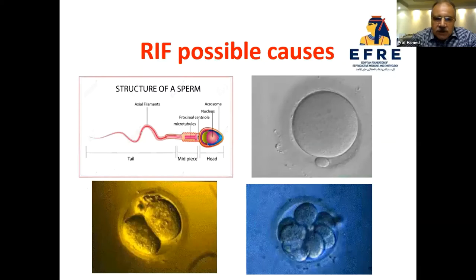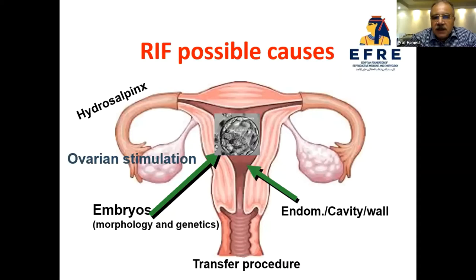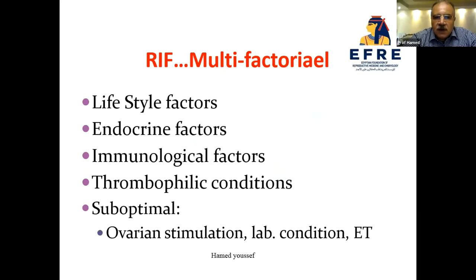The possible causes may be divided into sperm causes, oocyte causes, embryo causes, endometrial causes, cavity causes, wall causes, tubal or ovarian factors, or the transfer procedure itself. It may also be a multifactorial problem related to lifestyle factors, endocrine factors, immunological factors, and thrombophilic conditions.